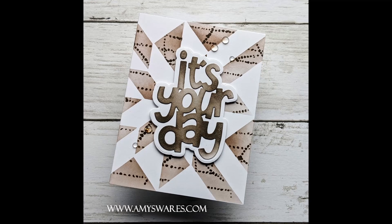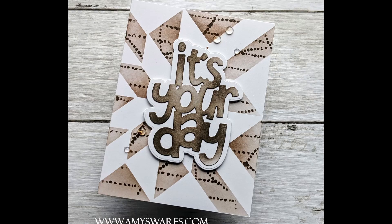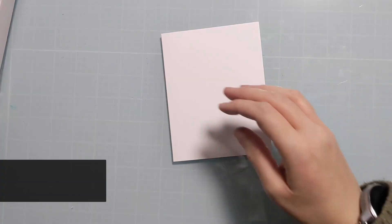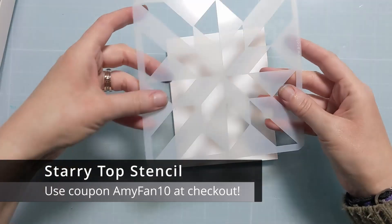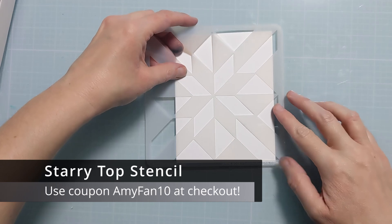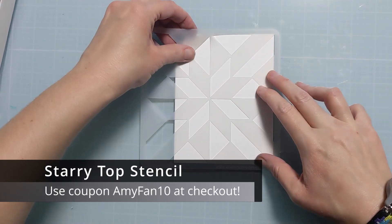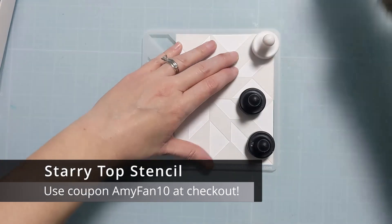But here is a photo of the finished card to show you the direction that we're headed. I worked directly on a card base and I just popped up the sentiment. Basically I'm going to layer up a couple of stencils directly on the card base. So to start I have the Starry Top Stencil from A Colorful Life Designs.